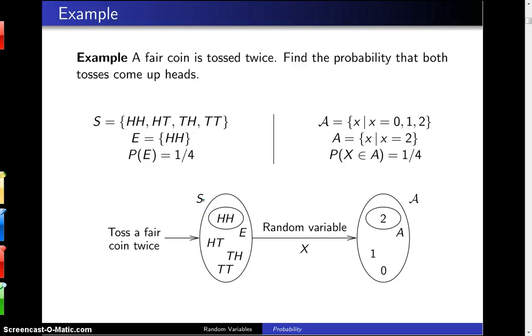A fair coin is tossed twice. Find the probability that both tosses come up heads. To the left of this bar will be the way that this question would have been answered in Chapter 2, and to the right of the bar will be the way that this question will be answered in Chapters 3 through 8 using random variables.